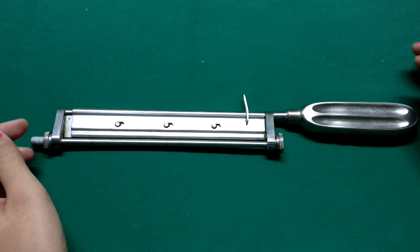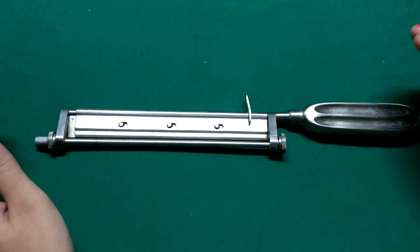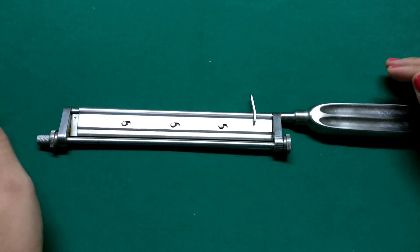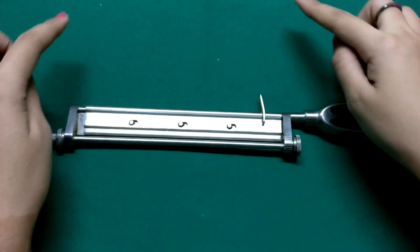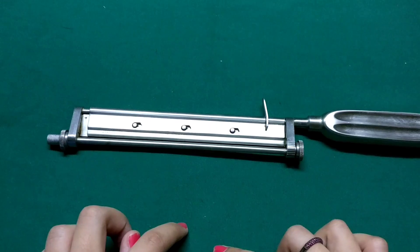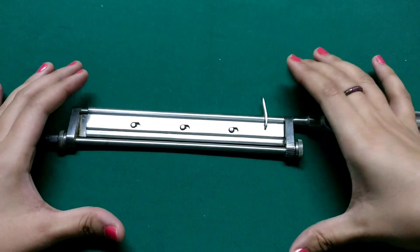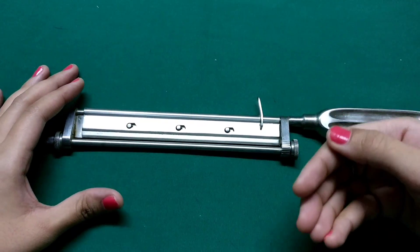This is called a Watson's modification of a Humby's knife. It's not the original Humby's knife as people might think. The original Humby's knife consisted of a rectangular frame on either side which would help to hold the skin in one place and then the graft would be harvested.